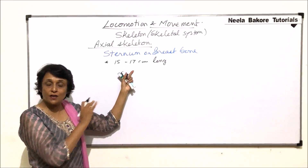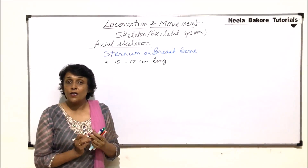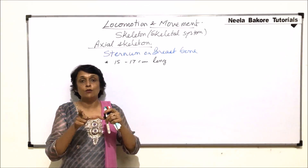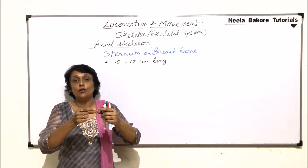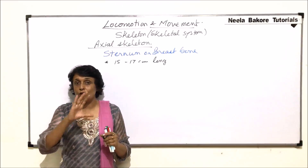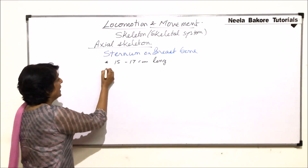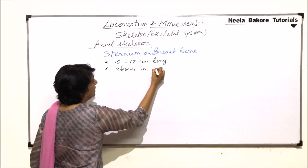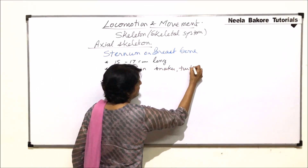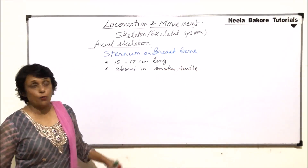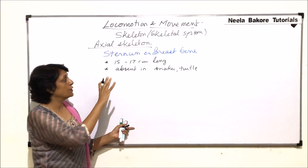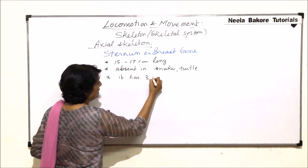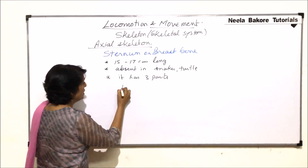Not all ribs are attached to the sternum — that we will see when we come to the rib cage. When we talked about the thoracic vertebrae, we said ribs are attached posteriorly to the backbone and anteriorly to the breast bone or sternum — specifically the first seven. Sternum is absent in some reptiles, such as snakes and turtles.